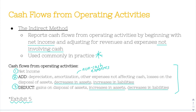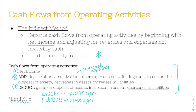The two most complicated things are what's happening with assets and liabilities. An easy trick: what's happening with assets is the opposite sign, and what's happening with liabilities is the same sign. For assets, we add a decrease and deduct an increase. For liabilities, we add an increase and deduct a decrease. So assets are plus/minus and minus/plus; liabilities are plus/plus and minus/minus.